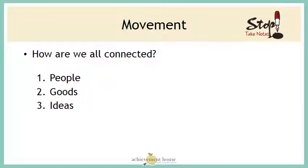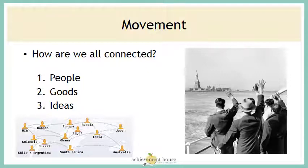The next theme is movement. How are we all connected? This theme involves people movement, how we move goods and items, and how we move ideas from one location to another. An example of people movement would be immigrants coming from one country to another — in this example, immigrants coming through Ellis Island in New York. Moving goods from one location to another would be importing and exporting items between countries. And the movement of ideas — an example is using the internet or Facebook to share ideas from one location to another.